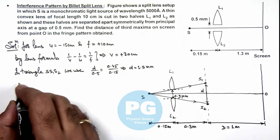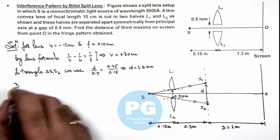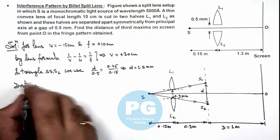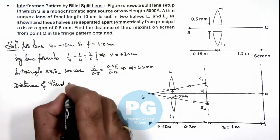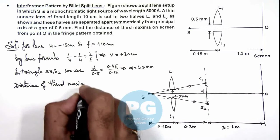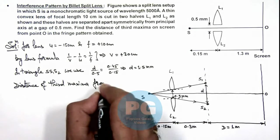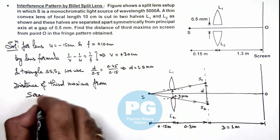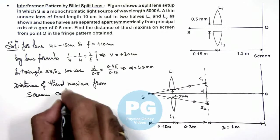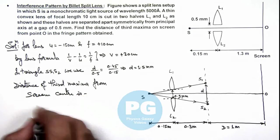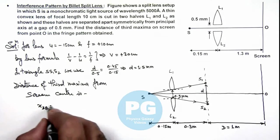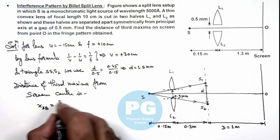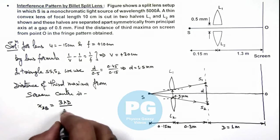The distance of third maxima from screen center, this x3, third bright fringe distance from center we can write as 3λD/d.